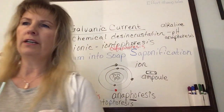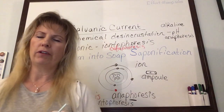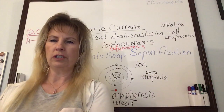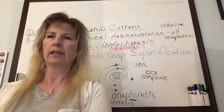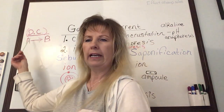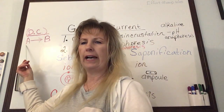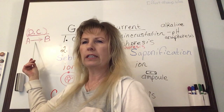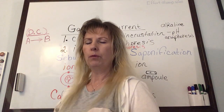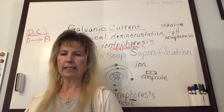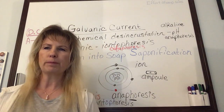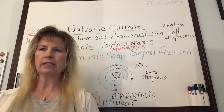The galvanic machine converts alternating current — found in your outlets — into direct current (DC). Those electrons are allowed to flow continuously in the same direction, which creates a relaxation response that can be regulated to target specific nerve endings in the epidermis.